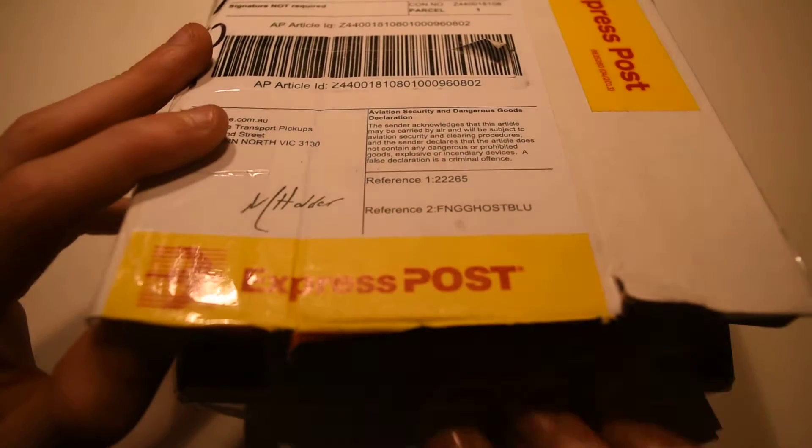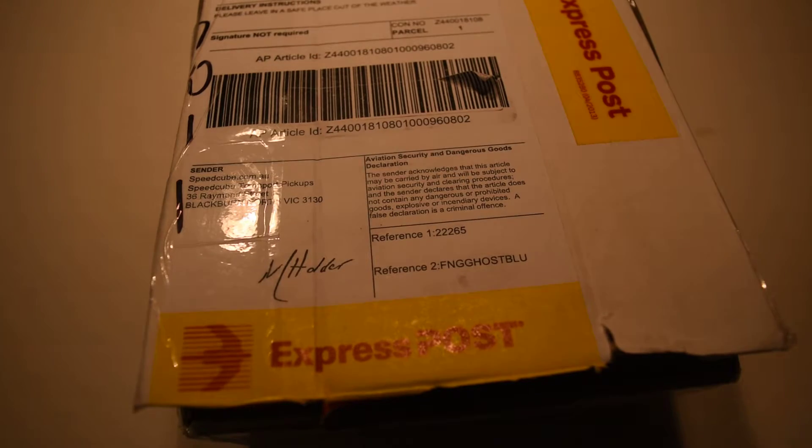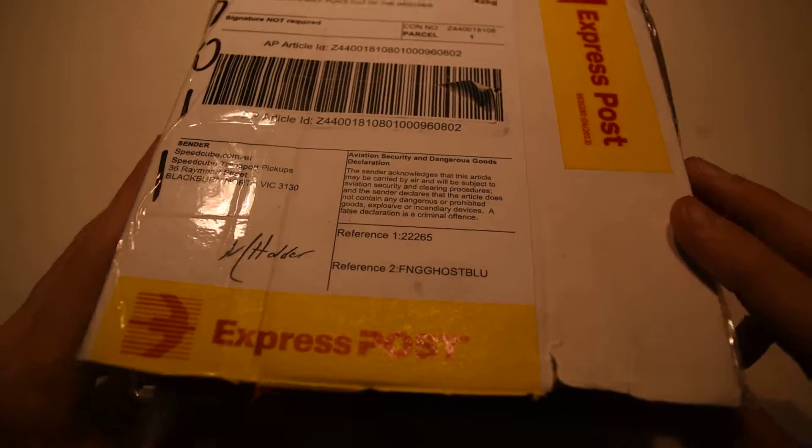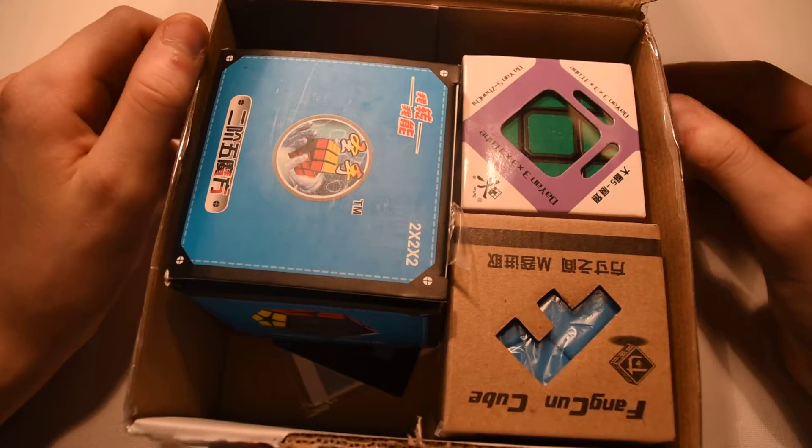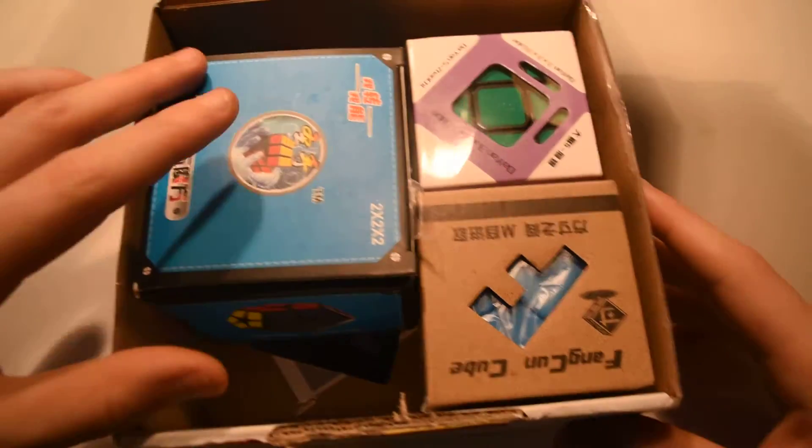So let me just remove the receipt. Yep all seems to be in order. And open her up. There it is. They're the three cubes that I have. So let's have a look at which ones I got.